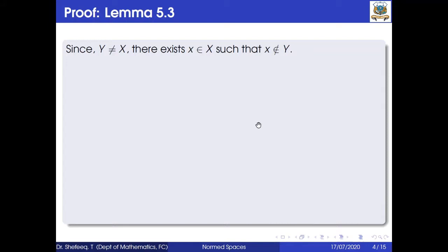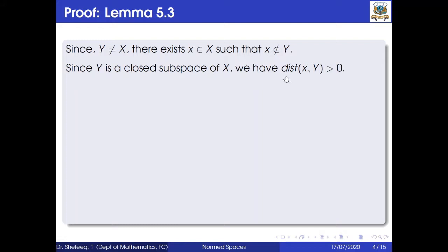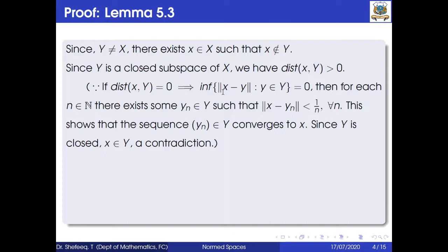Since Y is a proper subspace of X, there exists some x in X such that x does not belong to Y. Since Y is a closed subspace of X, the distance of x from Y is greater than 0. If dist(x, Y) were equal to 0, then by definition it equals the infimum of {‖x − y‖ : y ∈ Y} = 0. Then for each n in ℕ there exists y_n in Y such that ‖x − y_n‖ < 1/n.